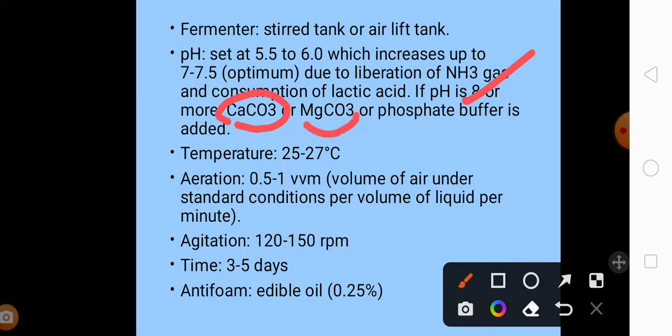Temperature should be around 25 to 27 degrees Celsius. Aeration is required at a rate of 0.5 to 1 vvm. VVM I have discussed earlier, that is volume of air under standard conditions per volume of liquid per minute. The agitation rate that is required is around 120 to 150 rpm. Fermentation of penicillin requires around 7 days. Anti-foaming agents that are used is edible oil up to 0.25 percent.